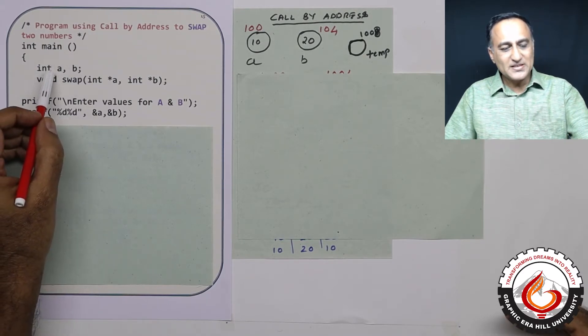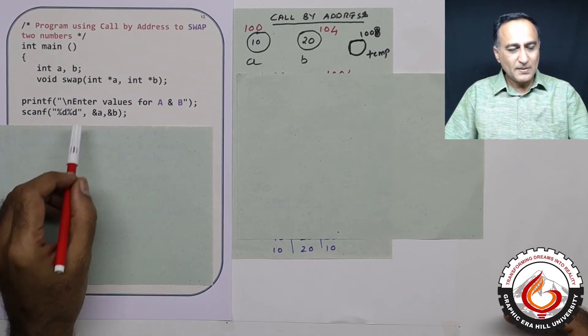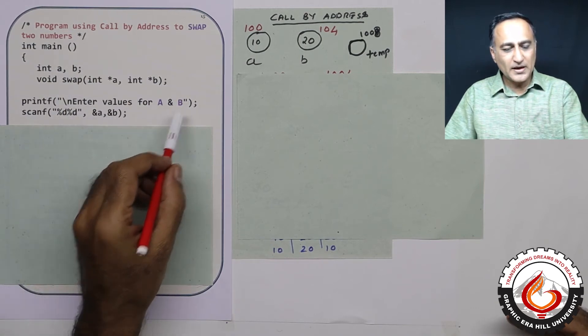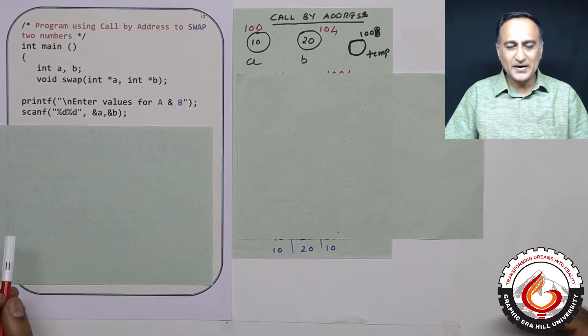I have declared two variables int a and b. Forget this swap for now. I am asking the user to enter the values for a and b. Let us say the user enters the value of a as 10 and b as 20.